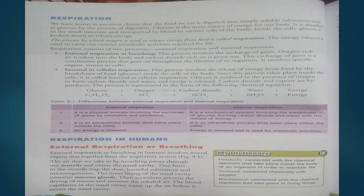Remember, whenever we eat food, that food is completely broken down in our small intestine. The nutrients are absorbed by the villi and sent to the cells of the body by the blood. When glucose goes inside the cell, oxygen is also present, and the glucose breaks down inside the cell in the presence of oxygen to form three products: carbon dioxide, water, and energy. Carbon dioxide is a harmful substance for the cell and should be exhaled from our body, water is absorbed by the body, and energy is used to perform different activities.